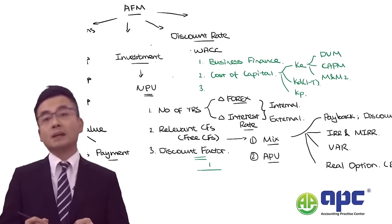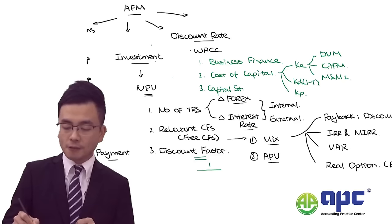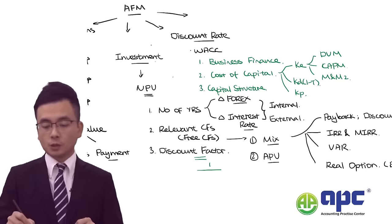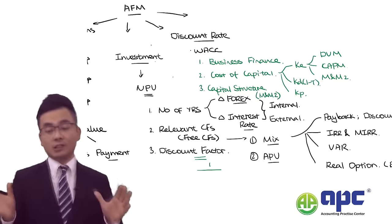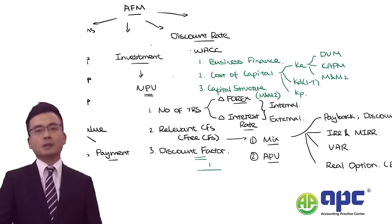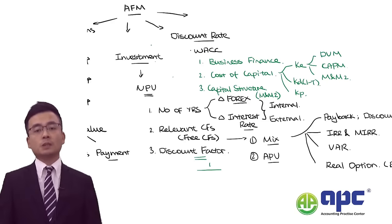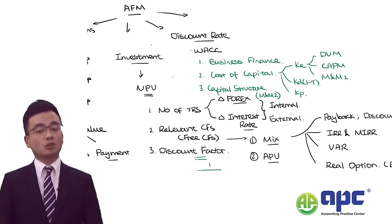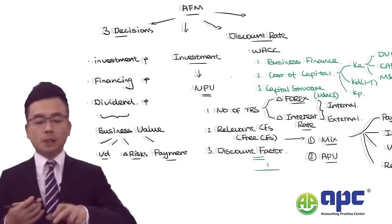Regarding capital structure, from the AFM exam's point of view, we always focus on M&M Proposition 2 application. Unlike previous examiner style where M&M Proposition 3 may also be tested, here we only focus on M&M Proposition 2.